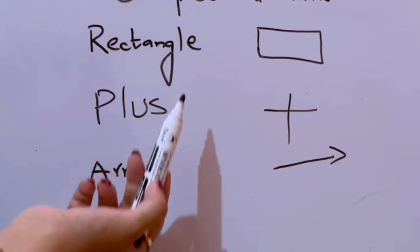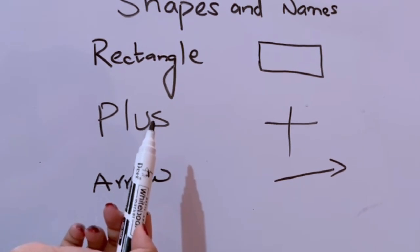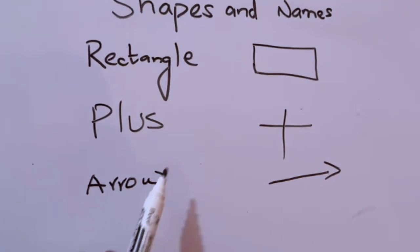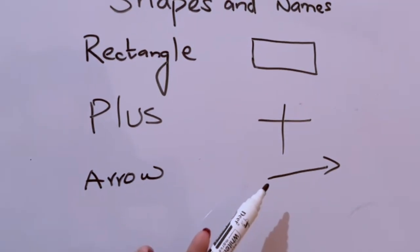Plus: P-L-U-S. Arrow: A-R-R-O-W. This one is arrow.